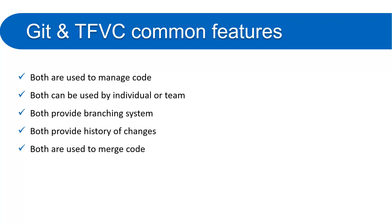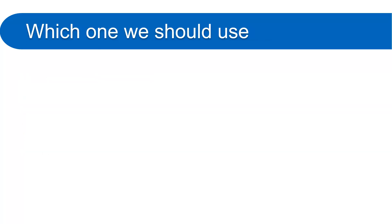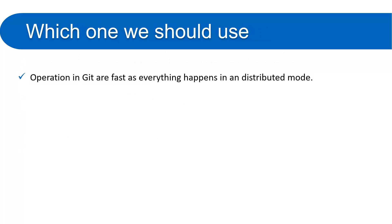Merging happens automatically if changes are not at the same place. For example, if a file has 20 lines and one developer edits line 4 while another edits the last line, the version control will merge them automatically. But if both developers make changes on the same line — say line 5 — there will be a conflict that you will need to resolve manually. We will learn conflict resolution in a later part of this tutorial.